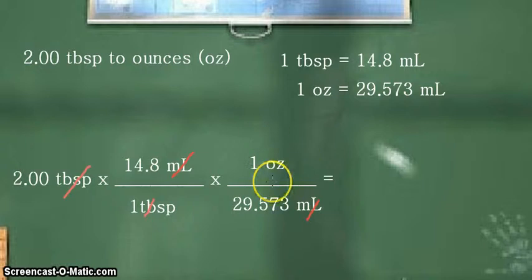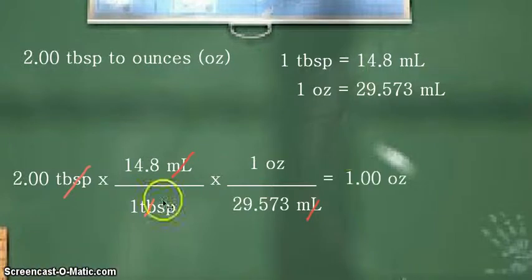So we are now left with our desired unit, which is in the unit of ounces, abbreviated as OZ. So when we do the calculation, we arrive to our answer, which is 1.00 ounce.